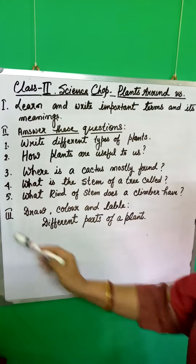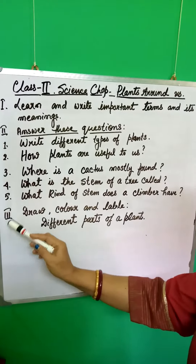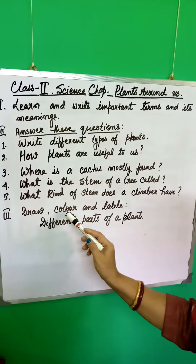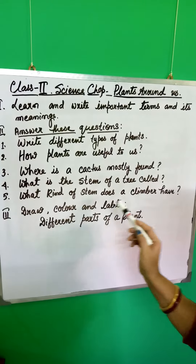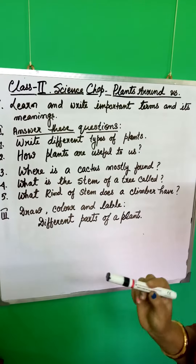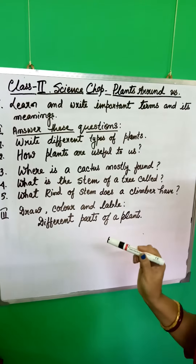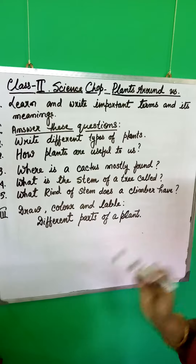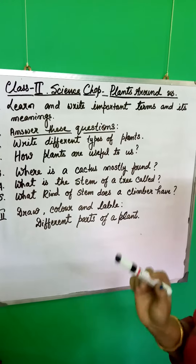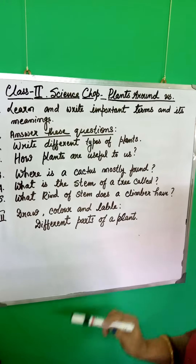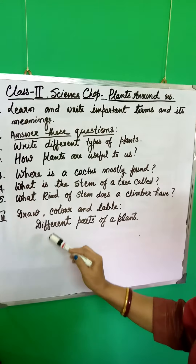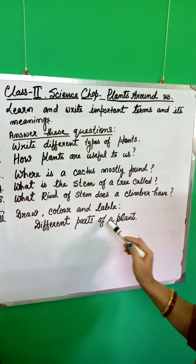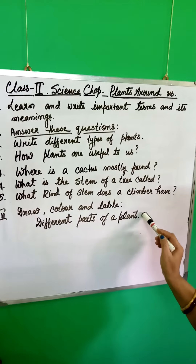Number 3 is drawing time. Draw, color, and label different parts of a plant. You have to label it properly and color it using pencil color.